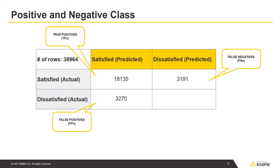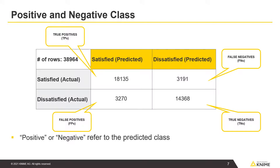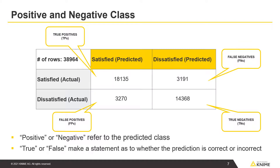False positives are displayed in the bottom-left cell of the confusion matrix. False positives are customers who are actually dissatisfied but were incorrectly classified as satisfied. True negatives are displayed in the bottom-right cell. True negatives are customers who are actually dissatisfied and correctly classified as such. To summarize, positive or negative refer to the predicted class, while true or false indicate whether the prediction is correct or incorrect.